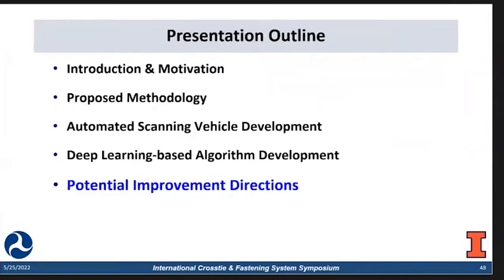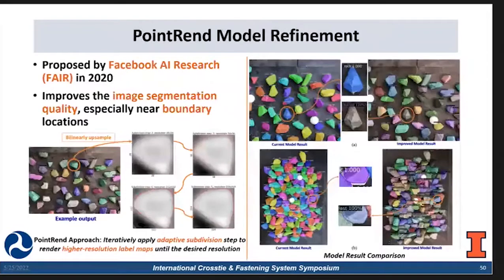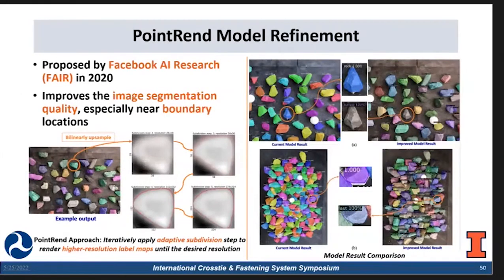The last section covers some potential improvements and future directions. The first is model architecture improvement. PointRend is a follow-up work of Mask R-CNN from FAIR. It improves image segmentation quality, especially near boundary locations. It applies adaptive subdivision to render higher-resolution feature maps until it reaches the desired results. On the right, we can see the current model results compared to the improved version.